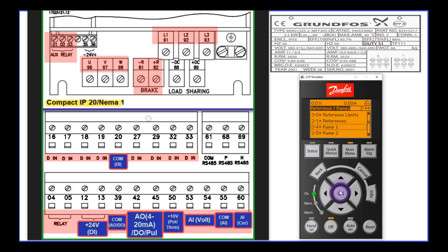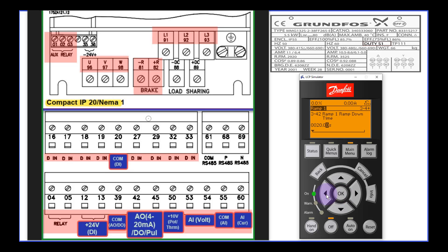After that, I select Ramp 1. I will select the ramp up time and press the OK button to change it — I will change it to 5 seconds. It depends on your process requirement. I press OK to accept the changes, then press the down arrow key to move to the next menu. The next menu is the ramp down time. I press OK to change it to 5 seconds, then press OK to accept, and press the back button until I see the main menu page.